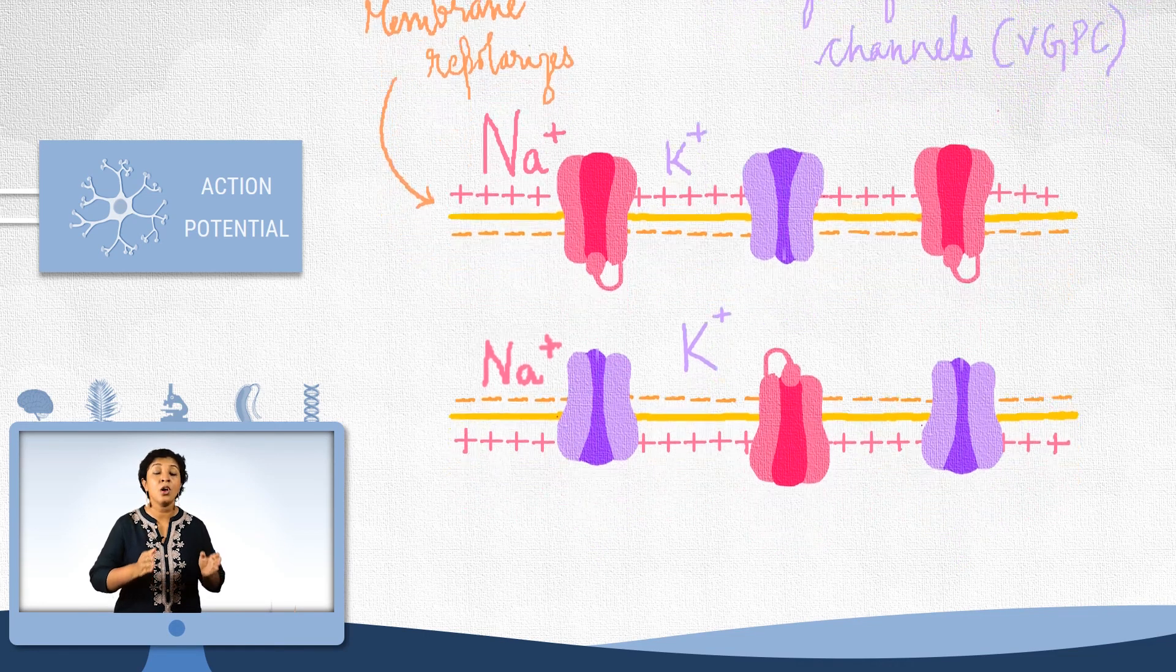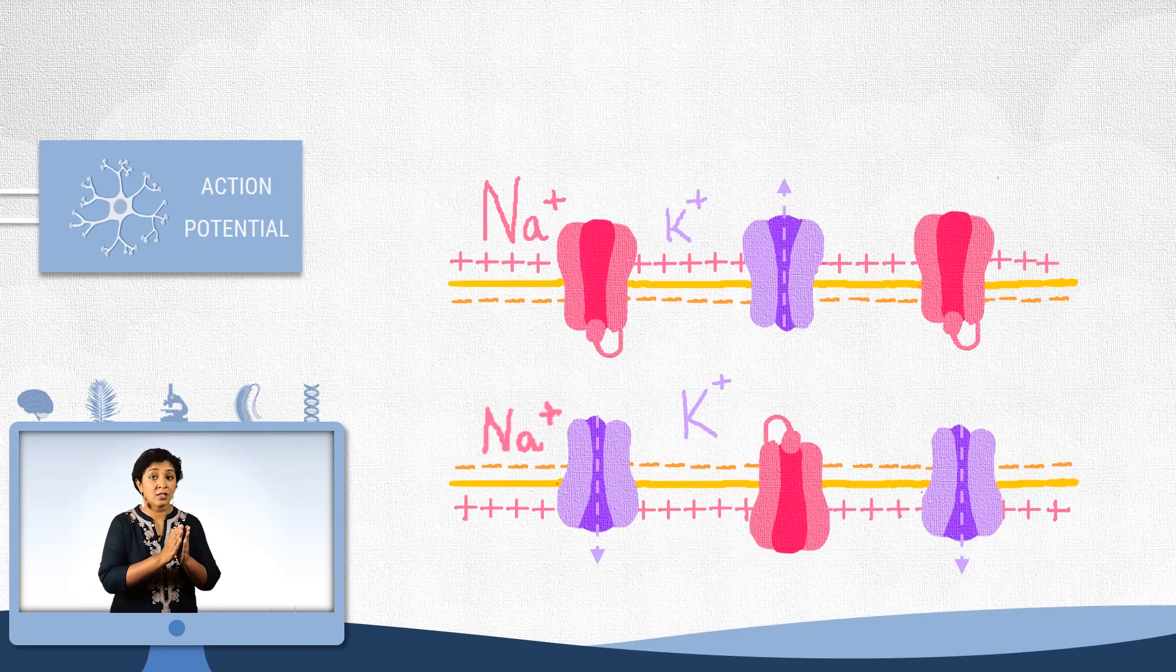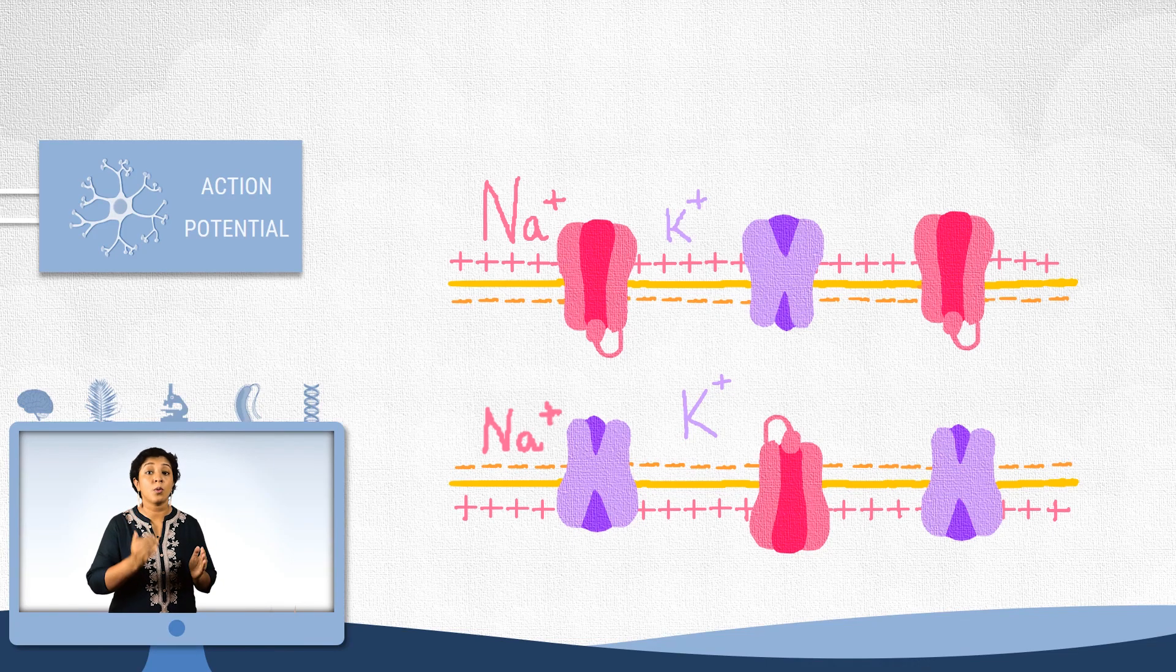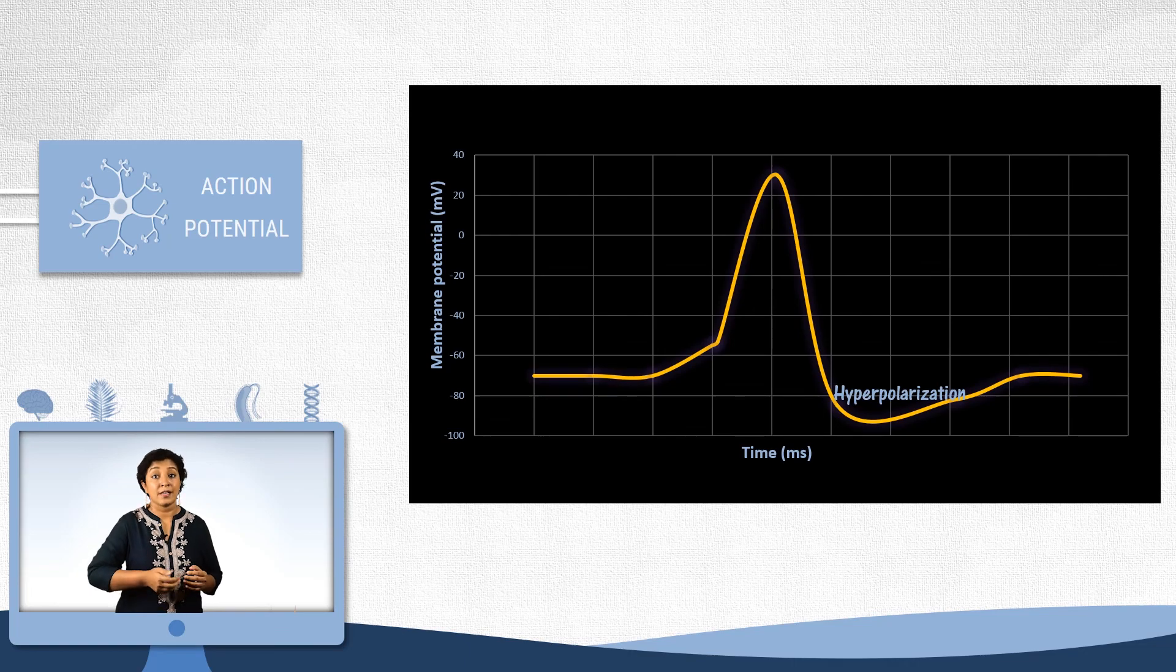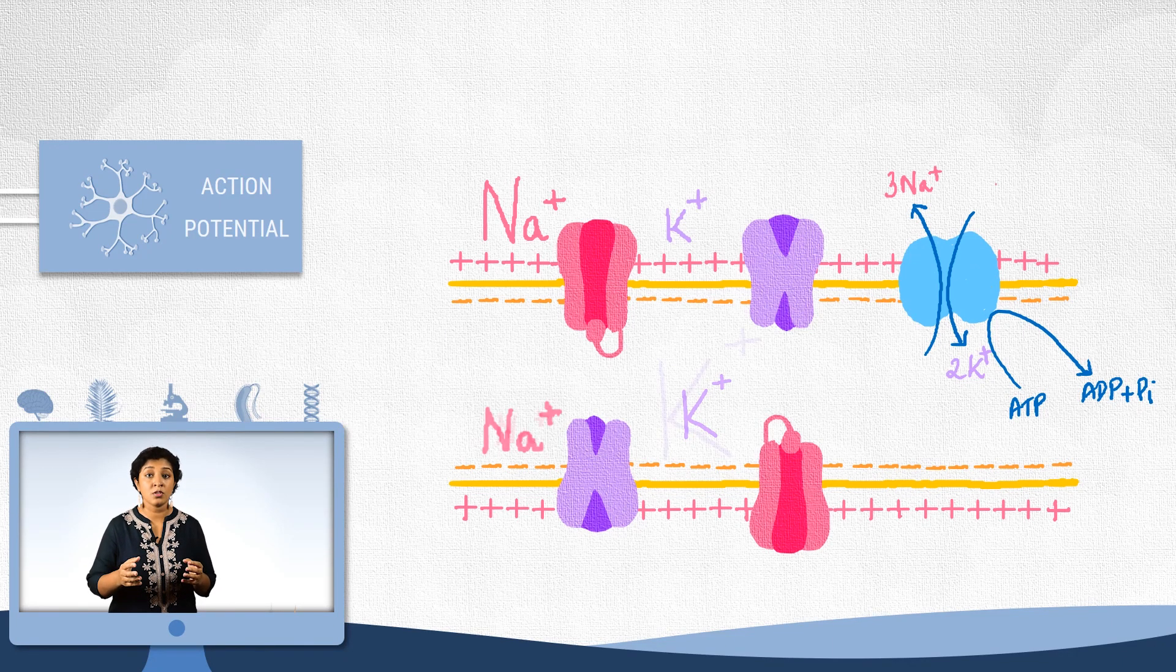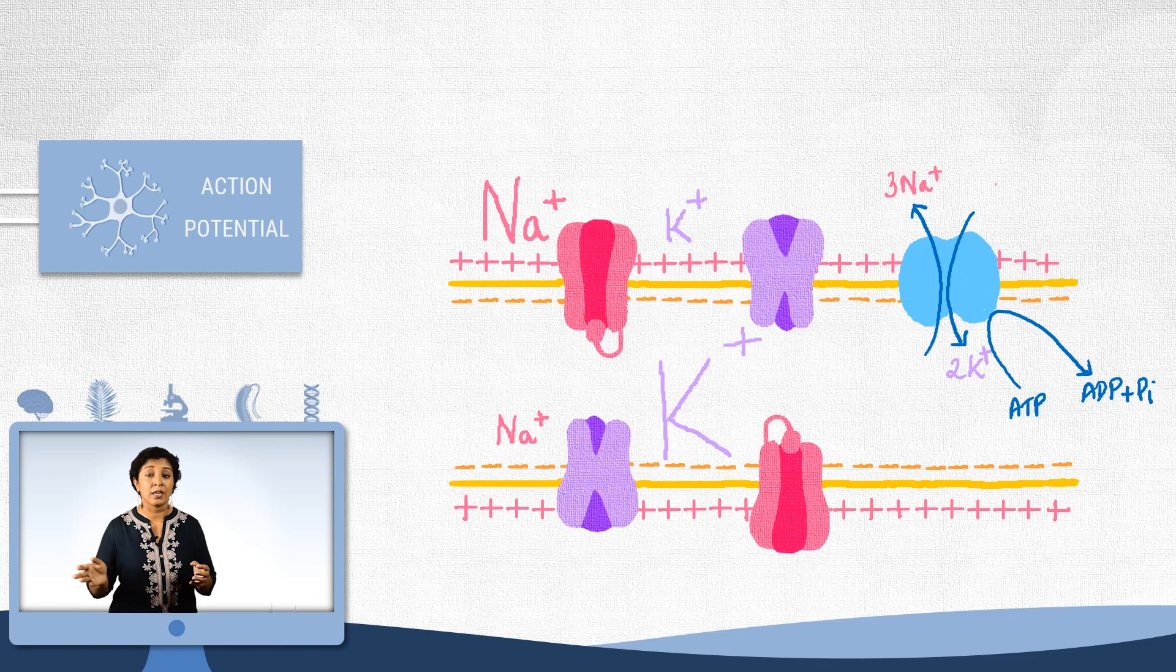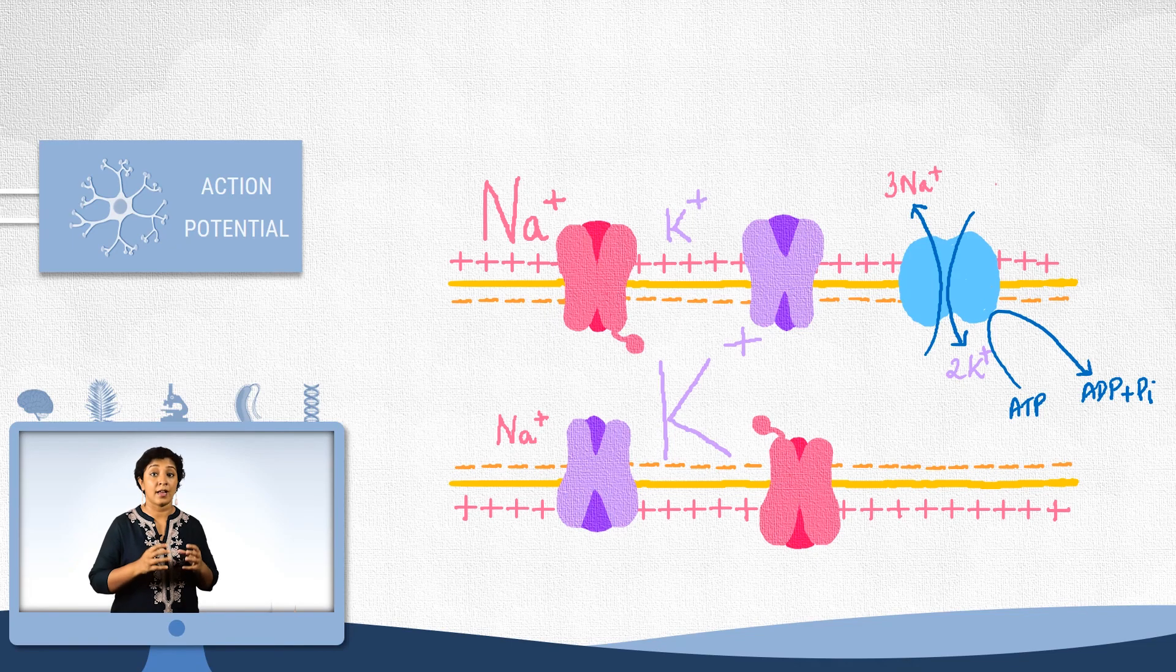And repolarization will close the voltage-gated potassium channels. But by the time these channels close, the membrane potential would have dropped way below normal to minus 80 or 90 millivolts. It will then slowly return to normal again by the action of the sodium-potassium ATPase. And the ion concentrations will be restored. And the voltage-gated sodium channel will go back to its closed active state, ready to fire an action potential should another stimulus arrive. So there, that's the story of how a neuron generates electricity.